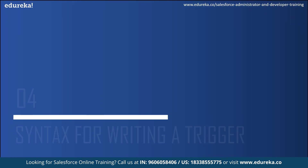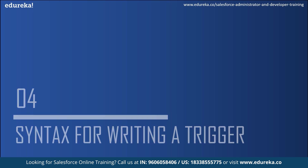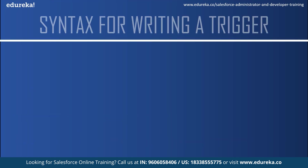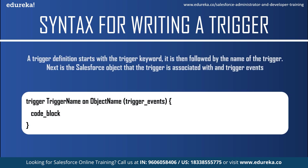The syntax of a trigger definition is quite different from a class definition syntax. A trigger definition starts with the trigger keyword, followed by the name of the trigger — you can name it anything you want. Next is the Salesforce object the trigger is associated with, which could be leads, contacts, accounts, or any custom object — also known as an sObject. Next is the trigger event, and you can fire a trigger on one or more events, comma-separated. Finally, the body of the code contains the condition under which it fires.